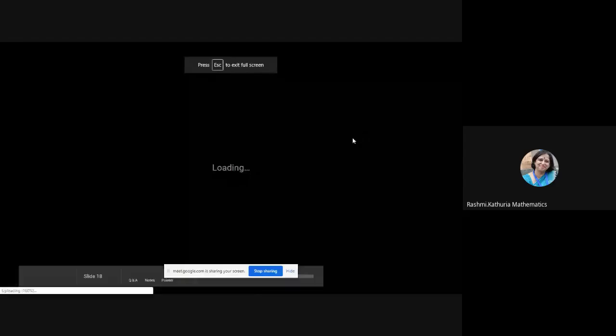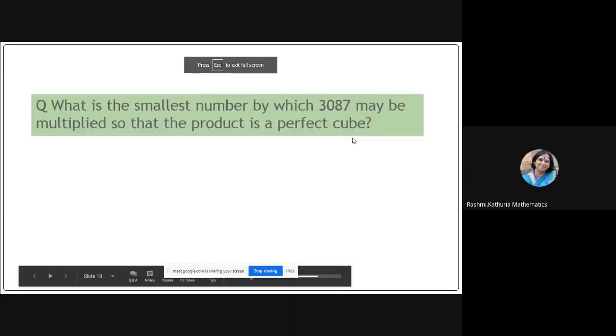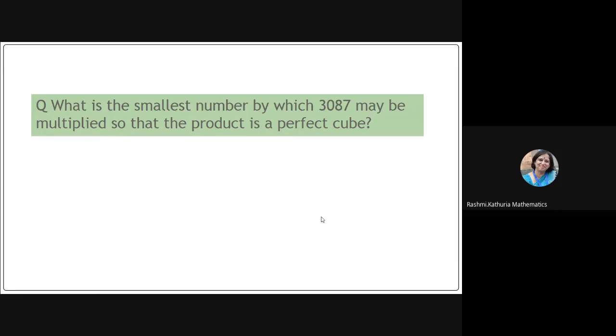So dear students, let us discuss one question from the chapter Cube and Cube Roots. What is the smallest number by which 3087 may be multiplied so that the product is a perfect cube? My dear students, in the previous